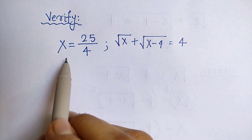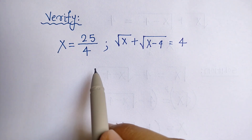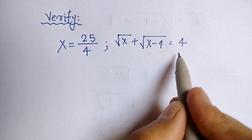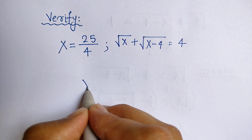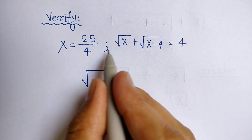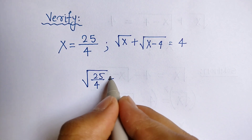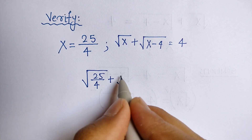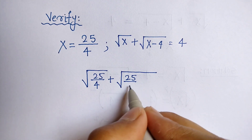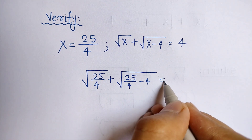Now we verify whether x is equal to 25 upon 4 is correct or not. We substitute x equal to 25 upon 4 into the original equation: root of 25 upon 4 plus root of 25 upon 4 minus 4 is equal to 4.